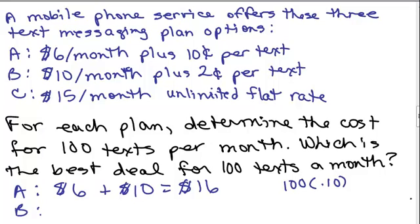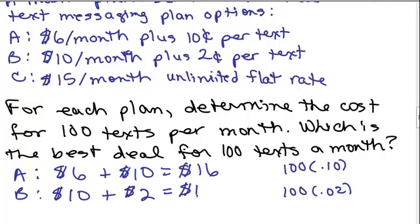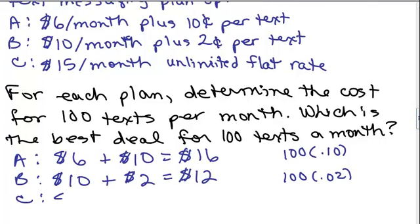What about Plan B? It'd be $10 for the month, plus 100 texts, but only 2 cents per text. 2 times 100 is 200 cents, that's $2. So it will cost you $12 a month on Plan B. And Plan C is always the same, just a $15 flat rate.